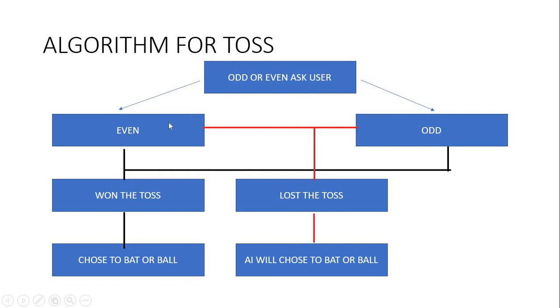If the user chooses odd and wins the toss, they can choose to bat or ball. If they lose the toss, the AI will choose whether to bat or ball. Here we'll use Python to code the AI.